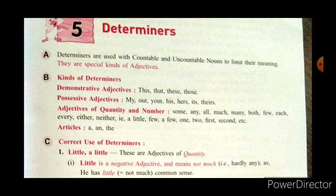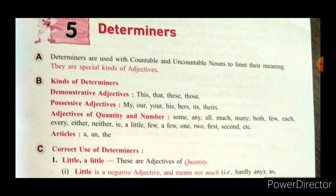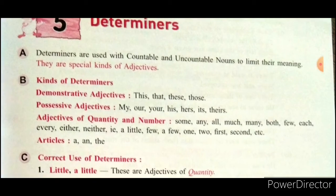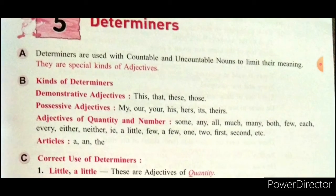The kinds of Determiners are: demonstrative adjectives — this, that, these, those — you have all come across these words. Possessive adjectives: my, our, your, his, hers, its, theirs.